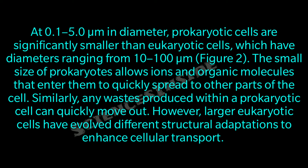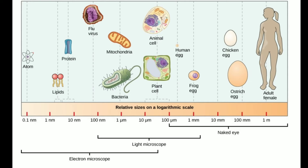The small size of prokaryotes allows ions and organic molecules that enter them to quickly spread to other parts of the cell. Similarly, any waste produced within the cell can quickly move out. However, large eukaryotic cells have evolved different structural adaptations to enhance cellular transport.